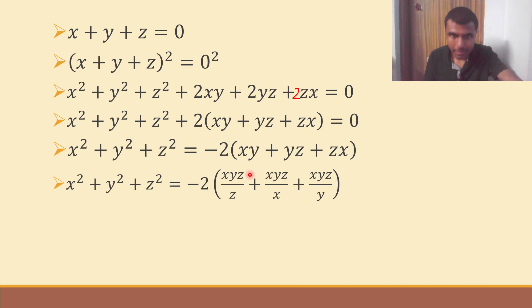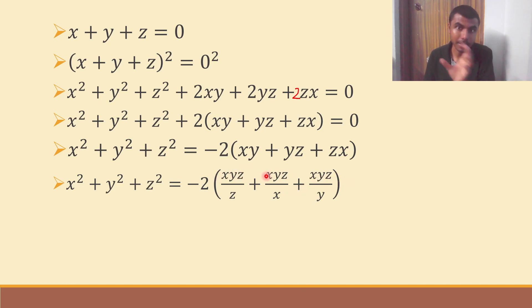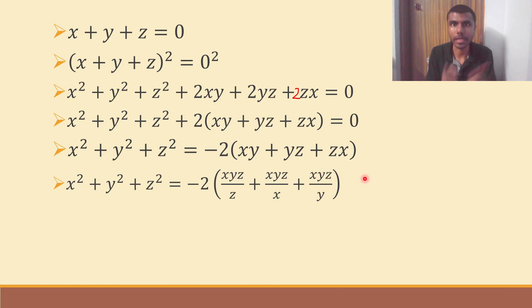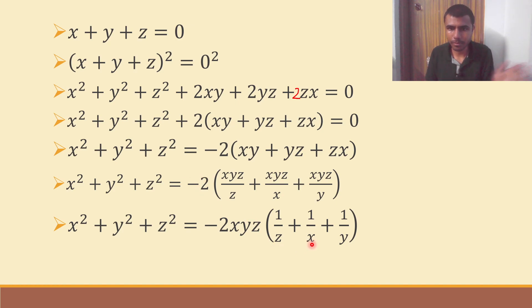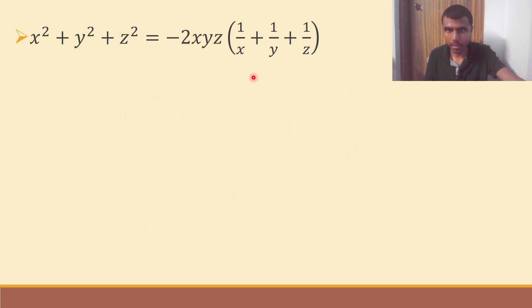Now, see the numerators — I have xyz, xyz, xyz. We can take xyz common. So I get minus 2xyz into 1/z plus 1/x plus 1/y. Rearranging, that is minus 2xyz into 1/x plus 1/y plus 1/z. Now, listen carefully — something important is coming.